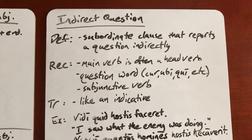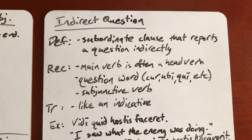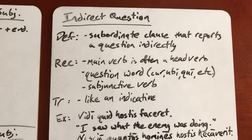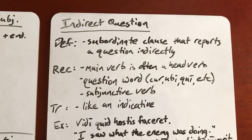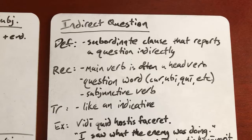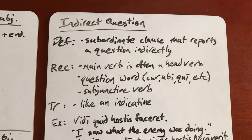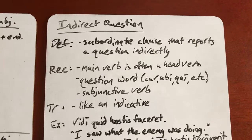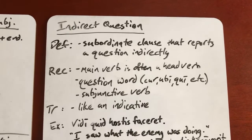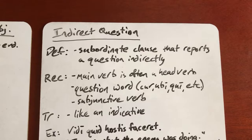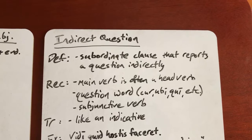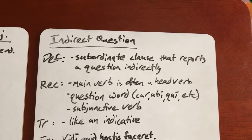There are quite a few question words: cur means why, ubi means when or where, qui can mean who, and there are several others as well. You've got quantus, which is a new one in this chapter, meaning how much. The -ne at the end of a word also indicates a question. So you'll have a question word that keys you off to having an indirect question. And then since it's a subjunctive use, your verb is going to be subjunctive. So: main verb is usually a head verb, then you have a question word, and then a subjunctive verb — that's how you can recognize it.